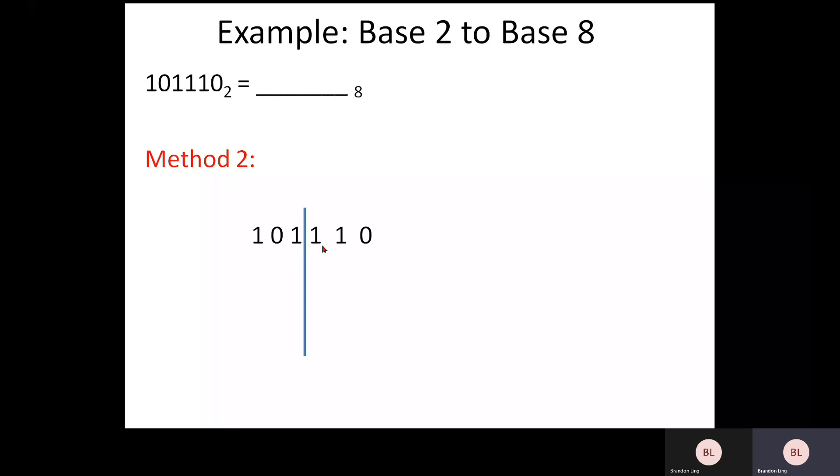You have here 101110. And using this method, we have to use a long bar here separating every three numbers. So every three numbers starting from your right, you separate into one, two, three, three numbers, and followed by another one, two, three.